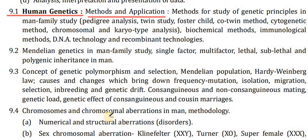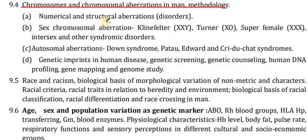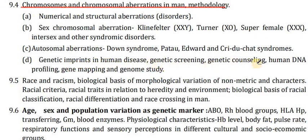Chromosomes and chromosomal aberrations in man: numerical and structural aberrations, sex chromosomal aberrations — Klinefelter (XXY), Turner's, XYY, superfemale (XXX), and intersex and other syndromic disorders. Autosomal aberrations: Down syndrome, Patau, Edwards, and Cri-du-chat syndromes. Genetic imprinting in human diseases, genetic screening, genetic counselling, human DNA profiling, gene mapping and genome studies.